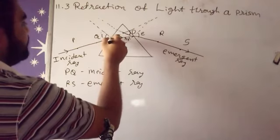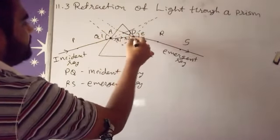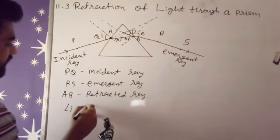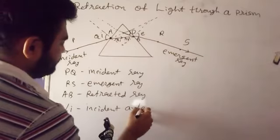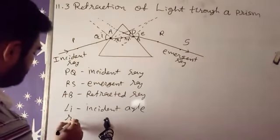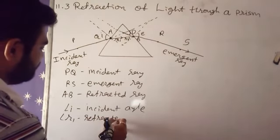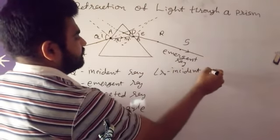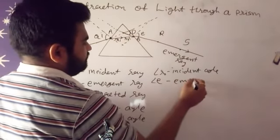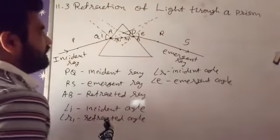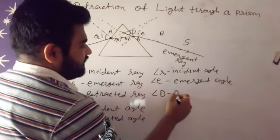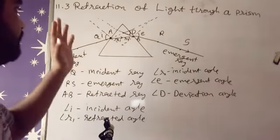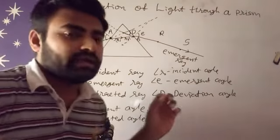AB is called the refracted ray. Now labeling all the angles: angle i is the incident angle, r1 is the refracted angle at the first surface, r2 is the incident angle at the second surface, e is the emergent angle, and capital D is the angle of deviation. These are all the angles involved in refraction of light through a prism.